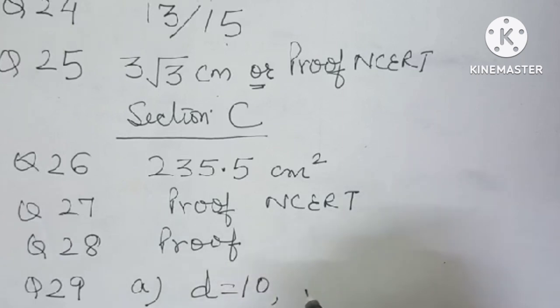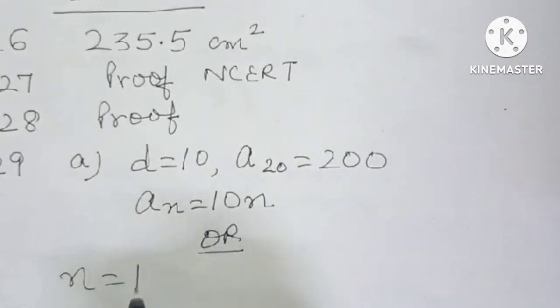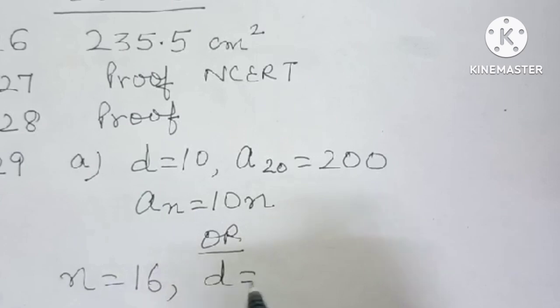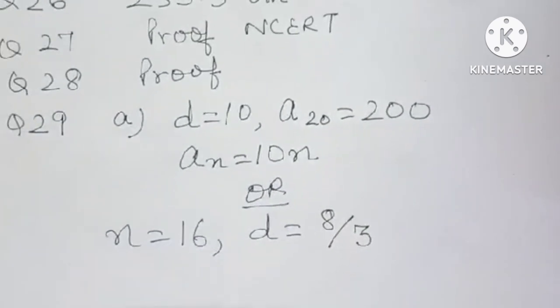Question number 29, for A part, D is equal to 10, A20 is equal to 200, and AN is equal to 10N. Now it's or part. Number is 16, and D comes out to be 8 by 3.